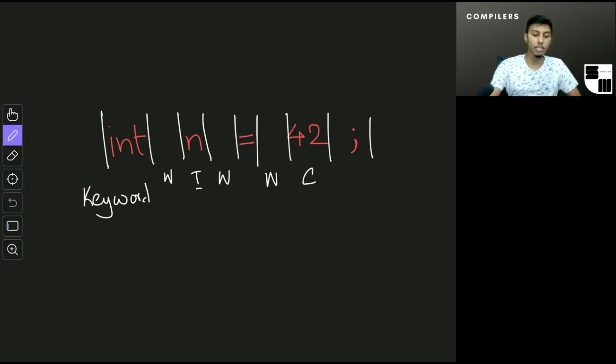The input to a lexical analyzer is this string and the output is going to be all of these pairs. I will have the word 'int' and then K for keyword. Next I would have a white space, so I would have just a space and then a W right here for white space.